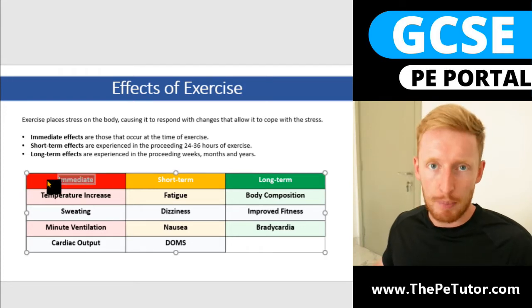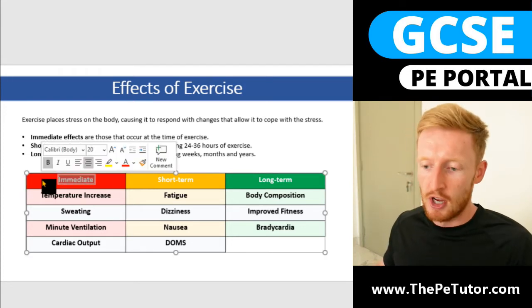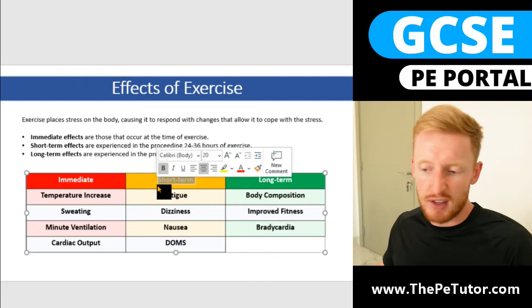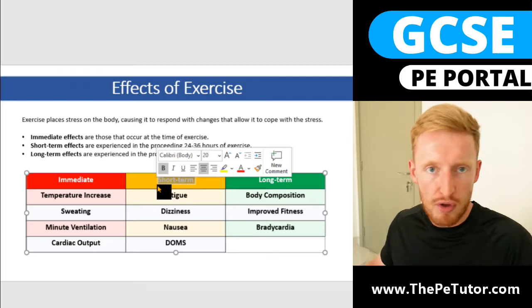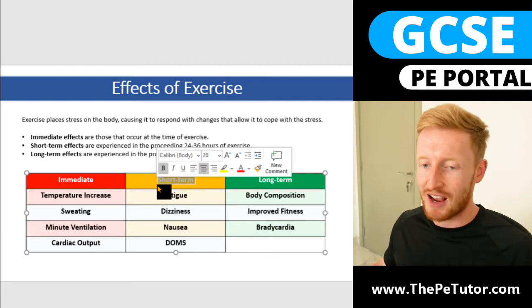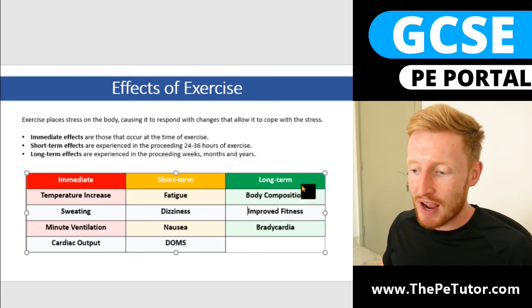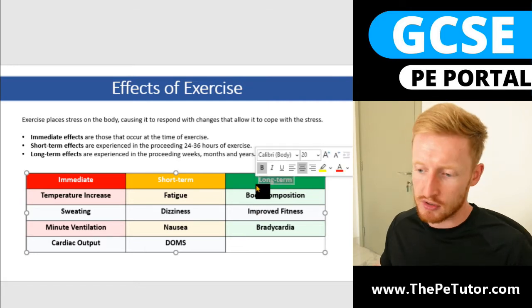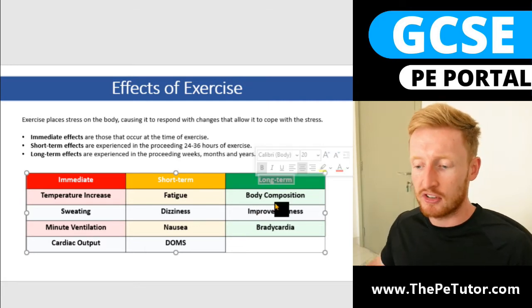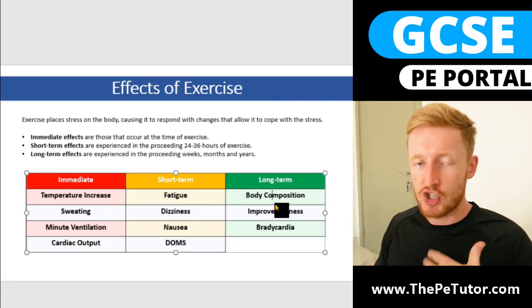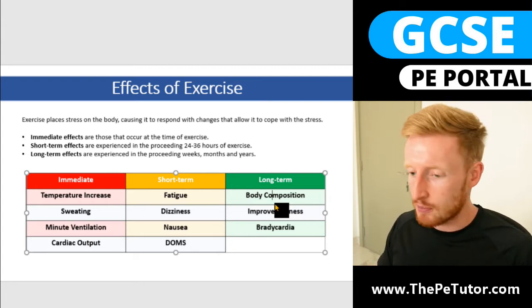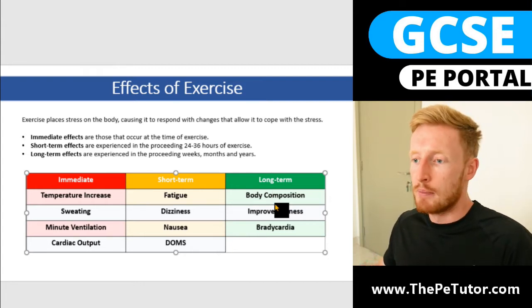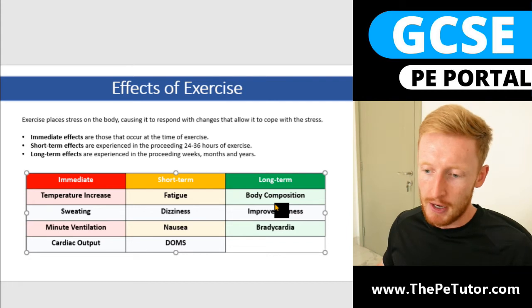We've got the immediate effects which happen in the moment, we've got the short-term which happen in the 24 to 36 to 48 hours following exercise, and then we have the longer term response or longer term adaptations where we start to see changes occurring in the body — bodily systems such as improved endurance, muscular hypertrophy and things like that.